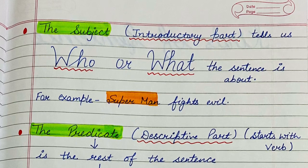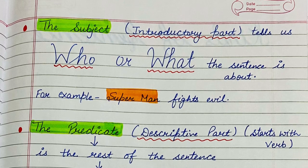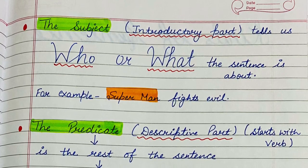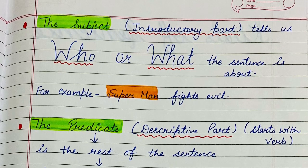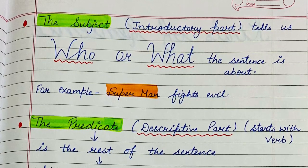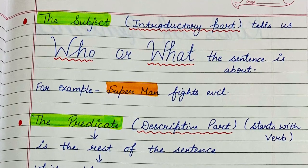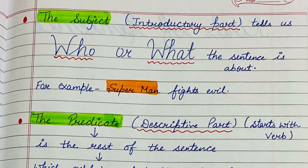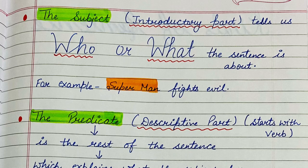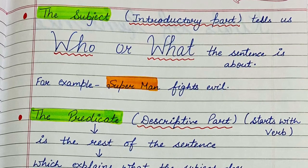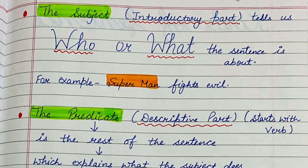First of all, I'm going to talk about subject. The subject is the introductory part — it introduces us with who or what the sentence is about. The subject will tell us about who, meaning who is the doer of the action, or what, meaning anything that we are talking about. So the subject is the introductory part; it introduces us with who and what the sentence is about.